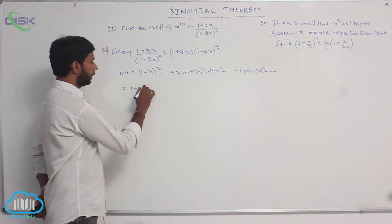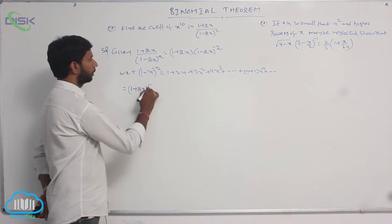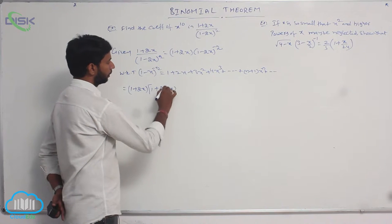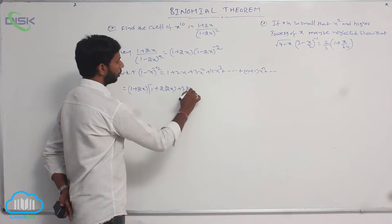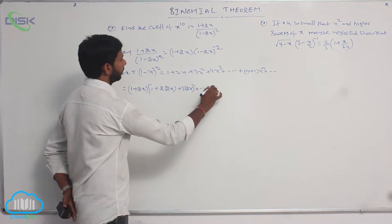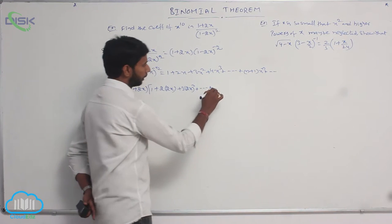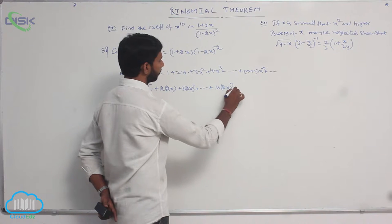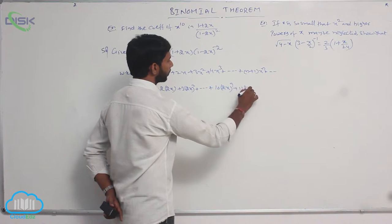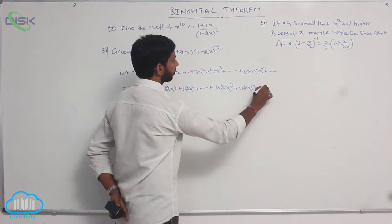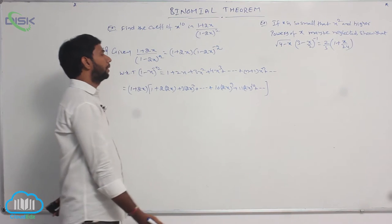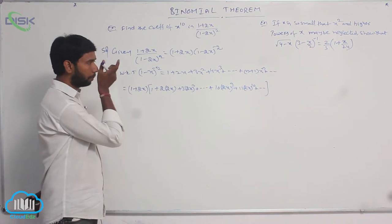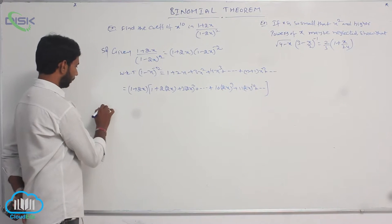Applying the formula, we get 1 plus 2x into 1 plus 2(2x) plus 3(2x) squared plus and so on, up to 10(2x) power 9 plus 11(2x) power 10 plus and so on.